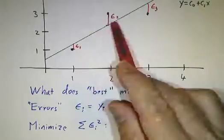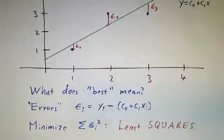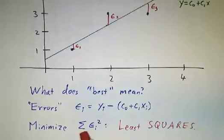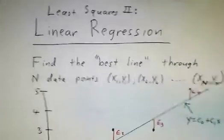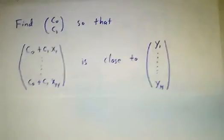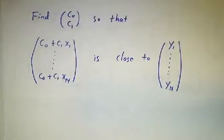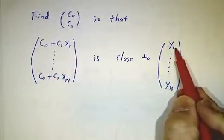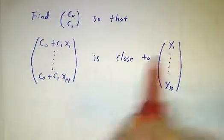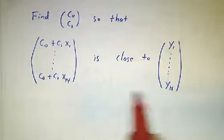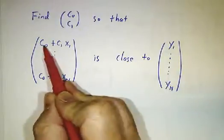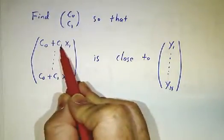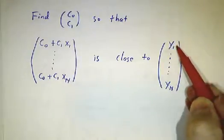We think of the errors as making up a vector in R^n, and we want that vector to be as small as possible, because the squared size of a vector is the sum of the squares of its entries. In other words, we want to find an intercept c0 and a slope c1 so that c0 + c1·x1 is close to y1, c0 + c1·x2 is close to y2, and so on through c0 + c1·xn close to yn — meaning the vector of predicted values is close to the vector of y's.